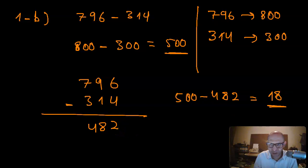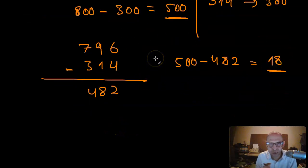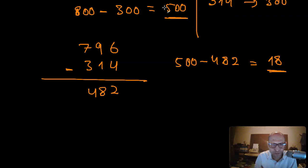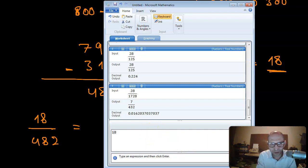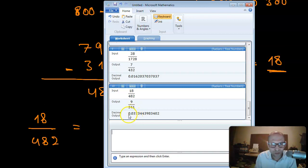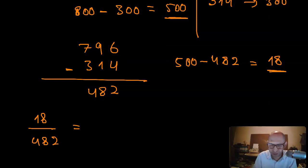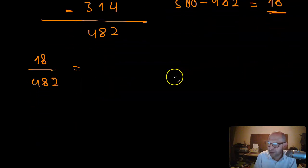To find how far the estimated difference is from the actual number, I form the fraction 18 over 482, which equals 18 divided by 482. That gives approximately 0.037. Rounding to two decimal places will help us express this as a percentage.